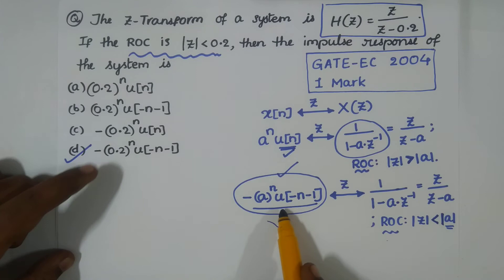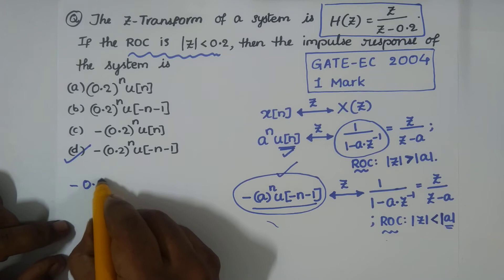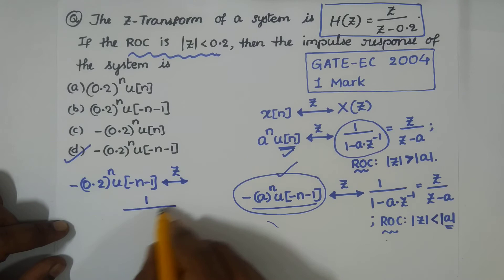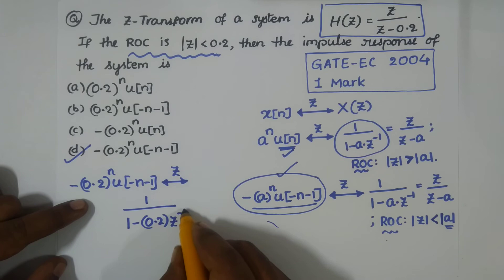Therefore, if you have (-0.2)^n·u(-n-1), its Z-transform is 1/(1 - a·z^(-1)) where a is now 0.2.